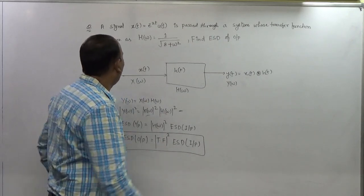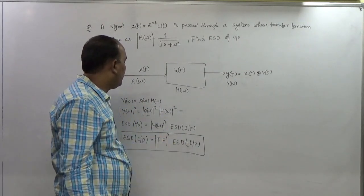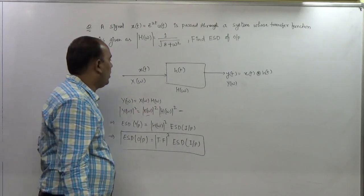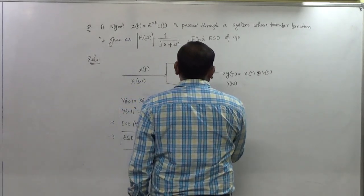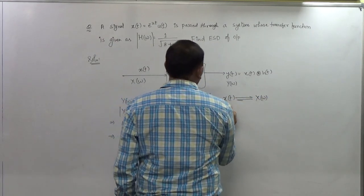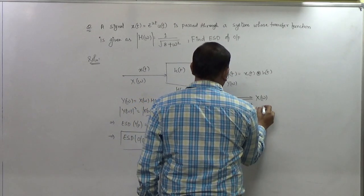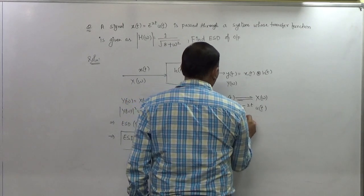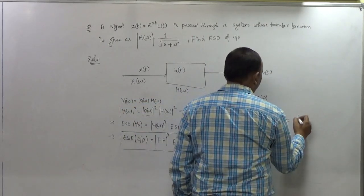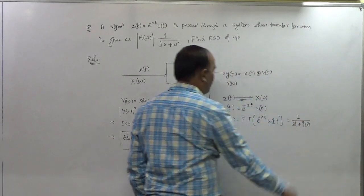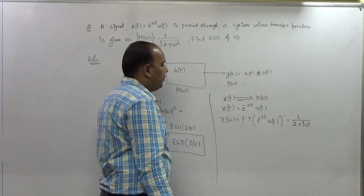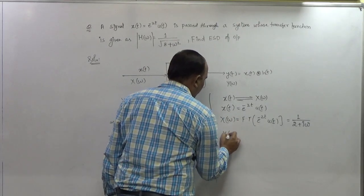To find the energy spectral density of the output, we need |H(ω)| — which is already given — and the energy spectral density of the input, which is |X(ω)|². So first, let's find the Fourier transform of x(t) = e^(−2t) · u(t). The Fourier transform of e^(−at)·u(t) is 1/(a + jω), so here a = 2, giving X(ω) = 1/(2 + jω).